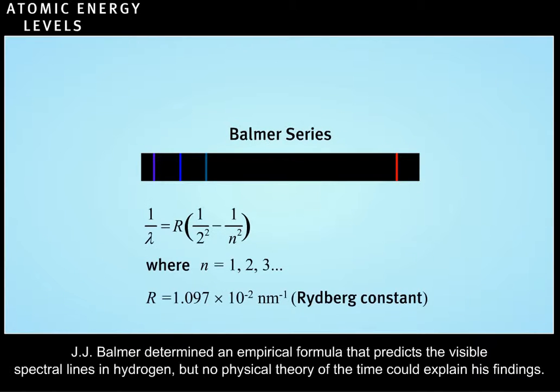J.J. Balmer determined an empirical formula that predicts the visible spectral lines in hydrogen, but no physical theory of the time could explain his findings.